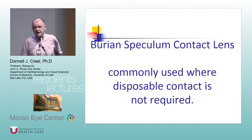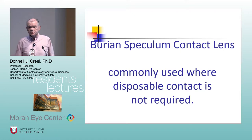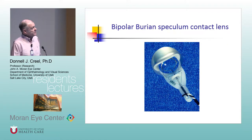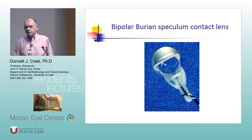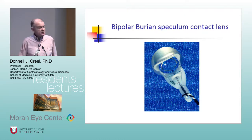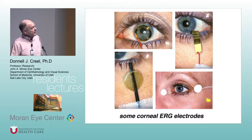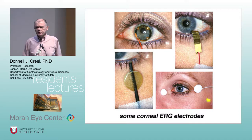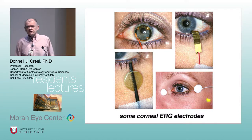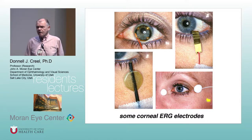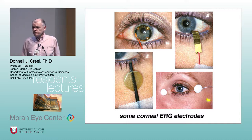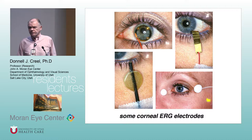There are different kinds of contacts used. I use generally the Burian-type contact lens, which is this nasty thing that all of you who have rotated through neuro or peds have probably seen. But there are other types of disposables. Disposables are becoming more common in use. There are countries, including Great Britain, that don't allow contact lenses to be reused, dating back to the breakout of Creutzfeldt-Jakob disease in the late 1990s.